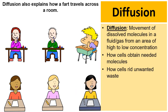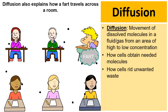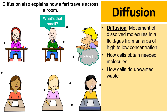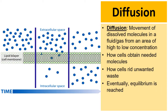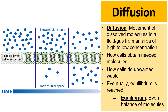Diffusion also explains how a fart will travel across a room. The student in the top right just let out a fart, so right now there's a high concentration of fart molecules around that student. Over time, they will diffuse to a lower concentrated area — all throughout the classroom — and eventually other students begin to notice it as it diffuses and they can smell it.